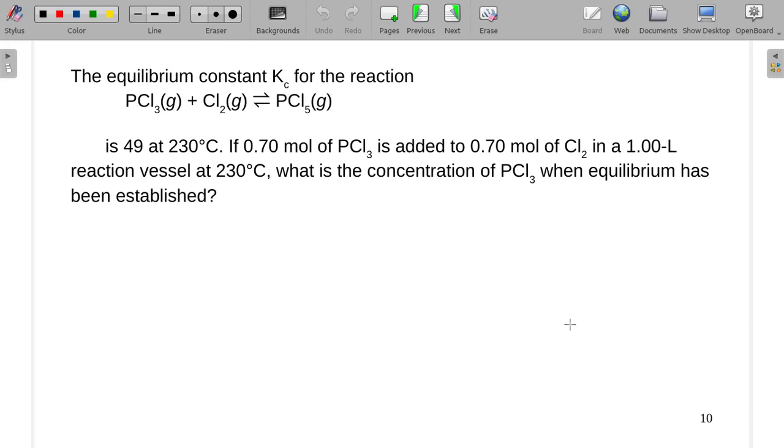The equilibrium constant for the following reaction is 49 at 230 degrees Celsius. If we put 0.7 moles of PCL3 added to 0.7 moles of CL2 in a 1 liter reaction vessel, what's the concentration of PCL3 when equilibrium has been established?